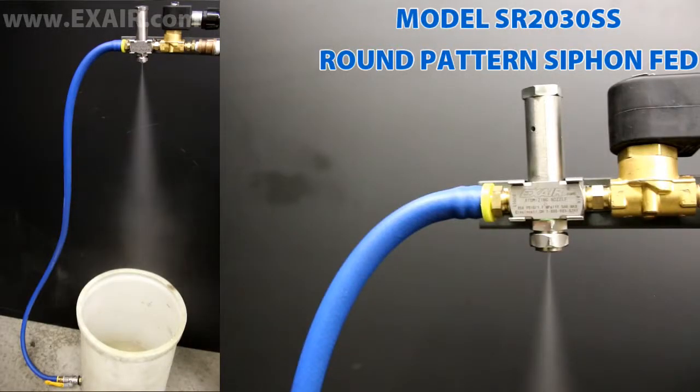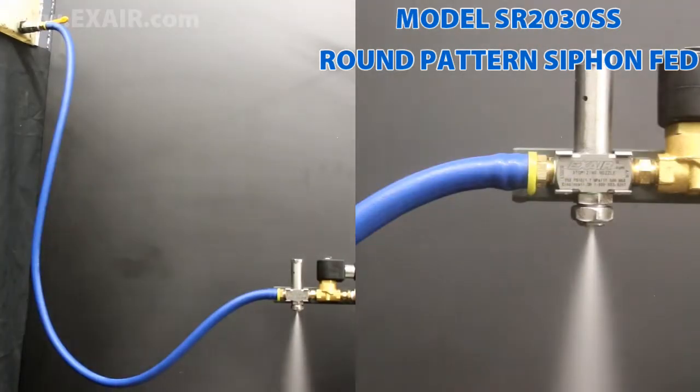Syphon-fed models mix the liquid and compressed air inside the air cap, but require no liquid pressure for operation. They can be fed from a siphon height of up to 36 inches or gravity-fed for higher flow rates. They are best suited for liquids with viscosities under 200 centipoise, like water or thinned solvents.